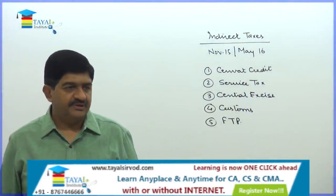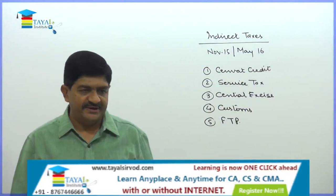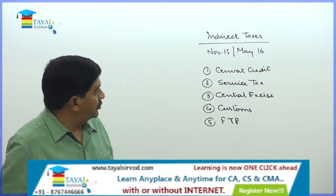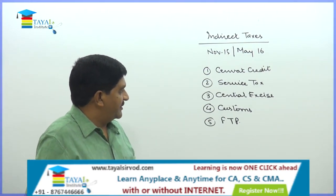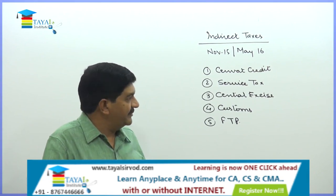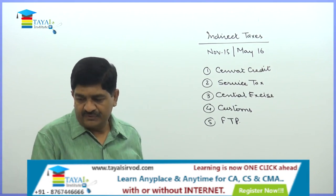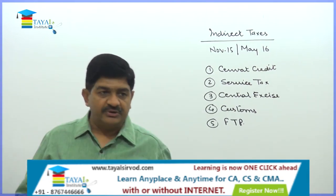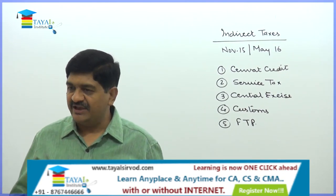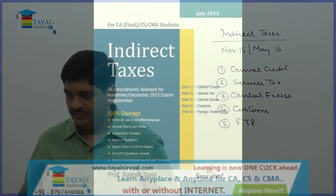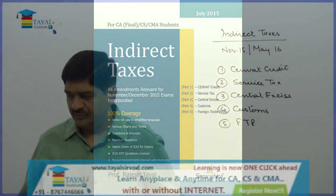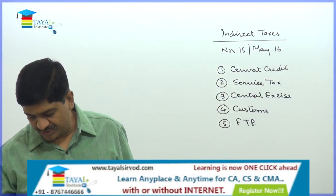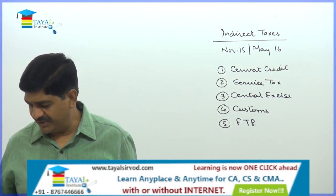Friends, starting with the first chapter: Cenvat Credit. We will go in this sequence — number 1: Cenvat Credit, number 2: Service Tax, number 3: Central Excise, number 4: Customs, number 5: Service Tax. The book is also in the same order, so we are going exactly as per the book. Come to page number 3, chapter number 1.